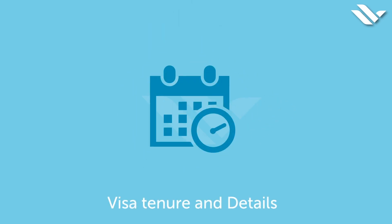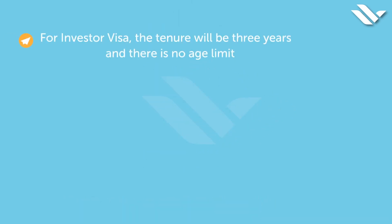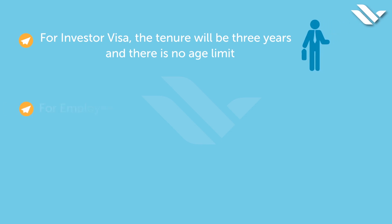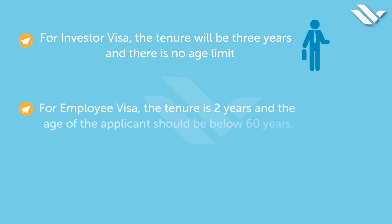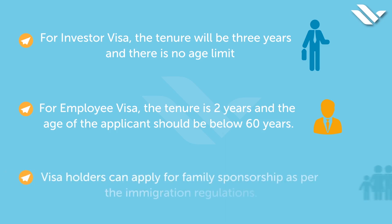Visa tenure and details are as follows. For investor visa, the tenure will be three years and there is no age limit. For employee visa, the tenure is two years and the age of the applicant should be below 60. Visa holders can apply for family sponsorship as per the immigration regulations.